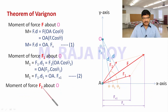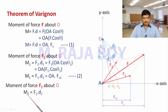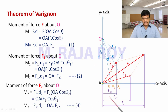Similarly, we will take the moment of F2 about O. To draw the perpendicular onto F2, extend the line and draw a perpendicular — this is D2. This angle will become theta 2. Moment M2 equals F2 into D2. D2 equals OA cos theta 2, and F2 cos theta 2 is nothing but Fx2, its x-component. This is equation 3.